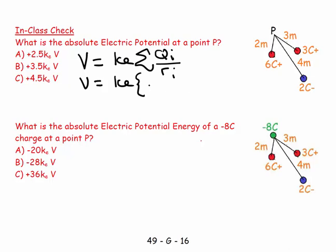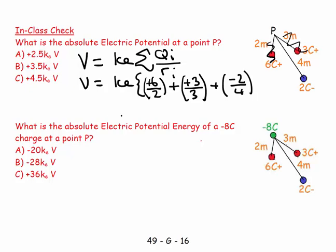V equals ke, and we're going to put this in. It's going to be plus six over two—I do take into account the sign of the charges—added to the next one, which is plus three divided by three, and then the one in the middle, added to minus two divided by four.